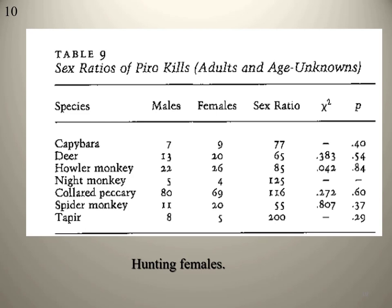Looking at just one example from the data, what it essentially shows is that hunters were indiscriminate in choosing prey to hunt — meaning they were not being intentional conservationists. They were hunting in the most efficient manner possible. They weren't hunting more males rather than females. In some species more males were killed, in others more females, but in general they were indiscriminate. They weren't intentionally trying to minimize their impact on the population.